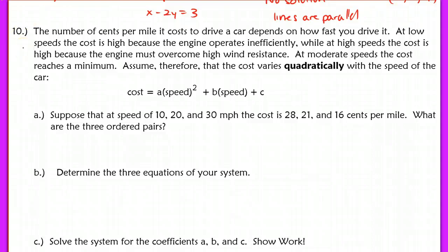It's kind of nice that you don't have to worry through all those negative signs that you would make mistakes on before. In number 10, it says the number of cents per mile it costs to drive a car depends on how fast you drive it. At low speeds, the cost is high because the engine is operating inefficiently. At high speeds, the cost is also high because the engine must overcome high wind resistance.